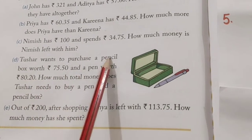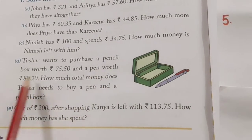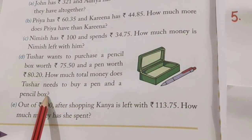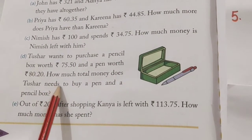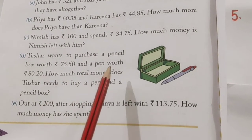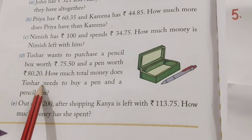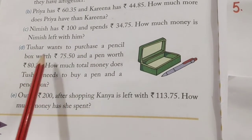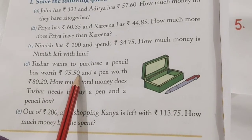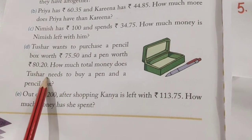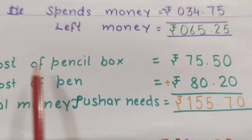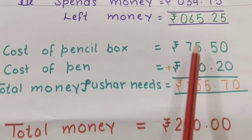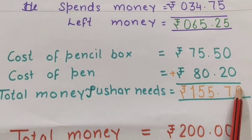Tushar wants to purchase a pencil box worth rupees this and a pen worth rupees this. How much total money does he need to buy a pen and a pencil box? In your book, the word 'needs' is used — that is wrong, please cut it. We have taught that when 'do' or 'does' is used in a sentence, then 's' should not be added to the verb form. Anyway, see the statement again. Tushar wants to purchase a pencil box worth rupees 75.50. The pen costs this much. Cost of pencil box this much, cost of pen this much. Total money Tushar needs — add both, and this much money Tushar needs to buy both things.